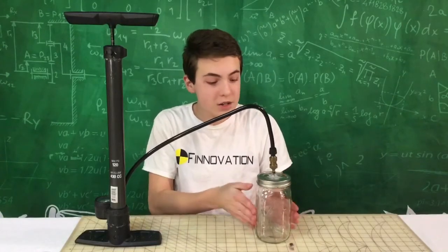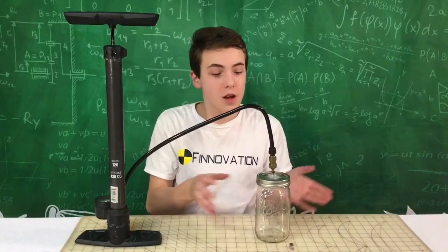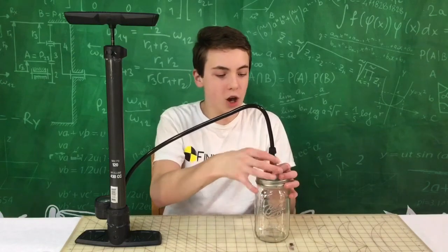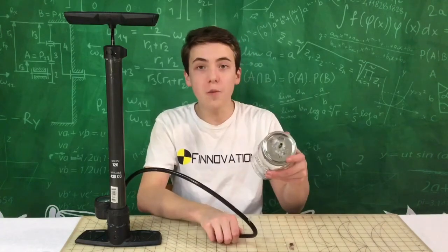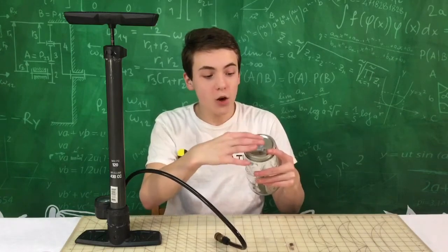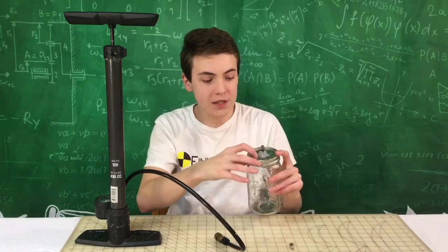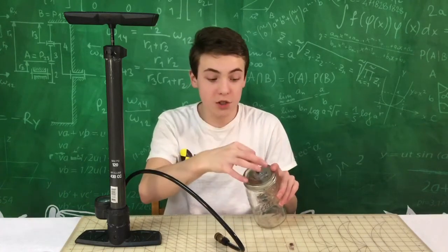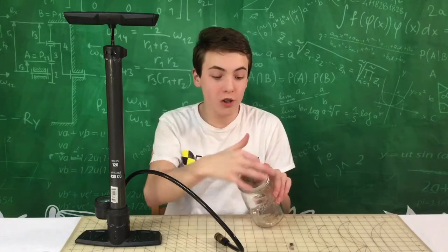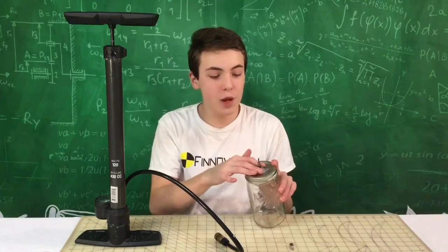Alright, now here's how we made our vacuum chamber. First off, this is just a mason jar. Then, on the top, we have a nozzle from an old bike tire, and we drilled a hole through the top of the mason jar, and then we just soldered it in there. We also used hot glue around the outside to get a little bit better of a seal.